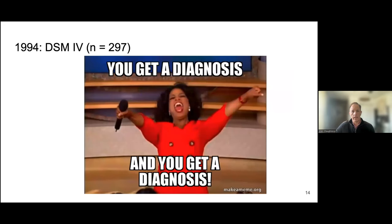DSM-IV came along in 1994 — now up to almost 300 illnesses — and, to paraphrase Oprah, everybody has a diagnosis. With the idea of demarcation between mental health and not, diagnostic creep happened. There was market expansion in psychiatry: let's look at everyday disorders of life, everyday things that cause stress or problems, and see if we can find a drug to treat those. What we're doing is sanctioning the expansion of drug therapy into areas that would normally be treated with talk therapy.